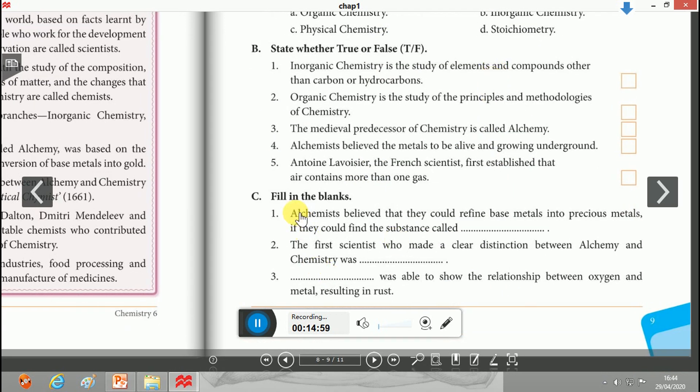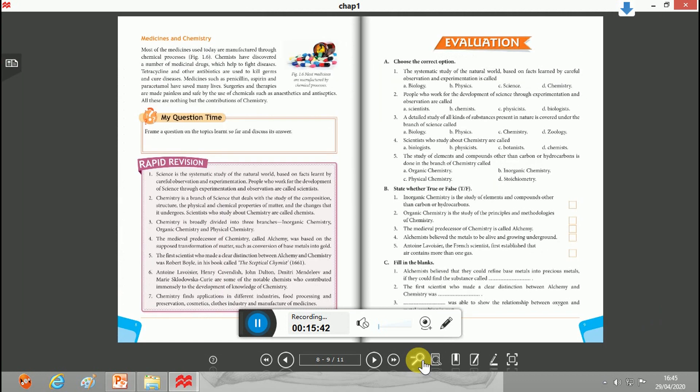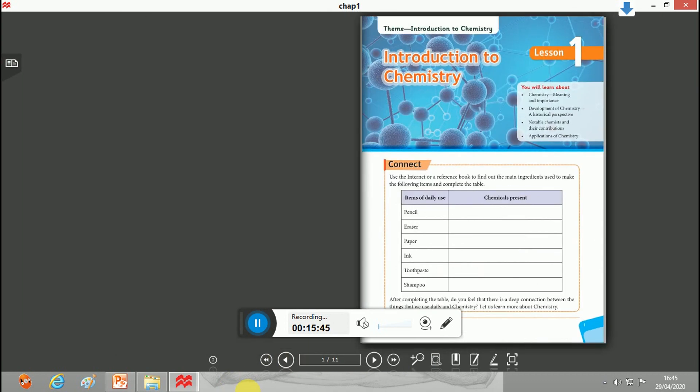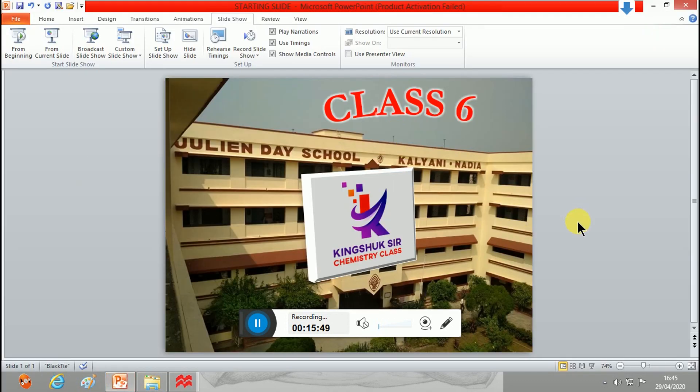Fill in the blanks: Alchemists believed they could refine base metals into precious metals if they could find the substance called philosopher's stone. The first scientist who made a clear distinction between alchemy and chemistry was Robert Boyle. Antoni Lavoisier was able to show the relationship between oxygen and metal rusting. Okay students, stay home, stay safe. Thank you.